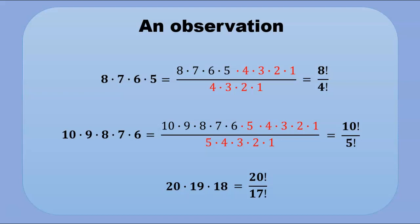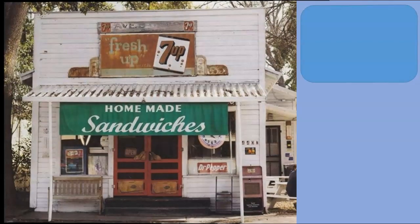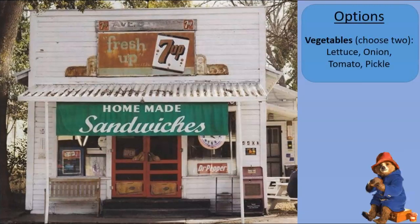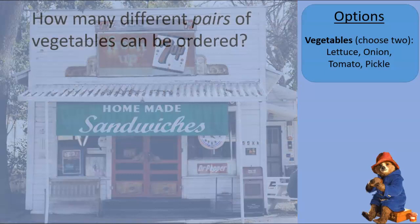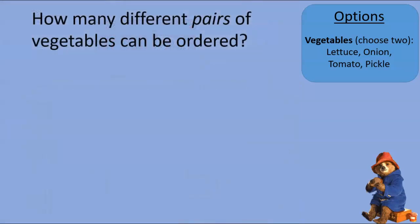We will use that soon. For now, let's go back to the sandwich shop. Coming back, we see that something has changed — we can now select vegetables. This is a more interesting case because we select multiple vegetables. We'll start with a scenario in which there are four from which to choose: lettuce, onion, tomato, and pickle. We must choose two of them. The question is: how many different pairs of vegetables can be ordered?